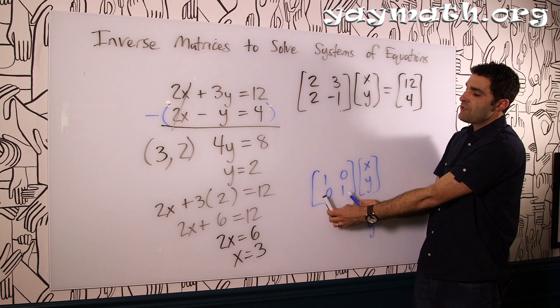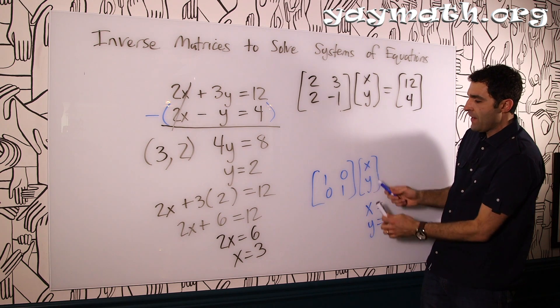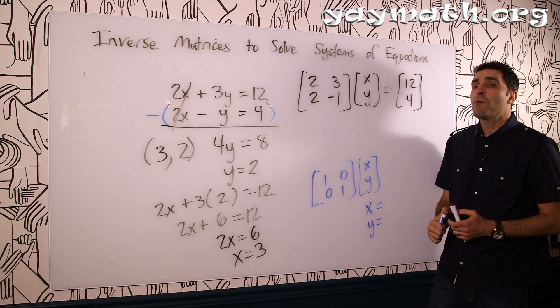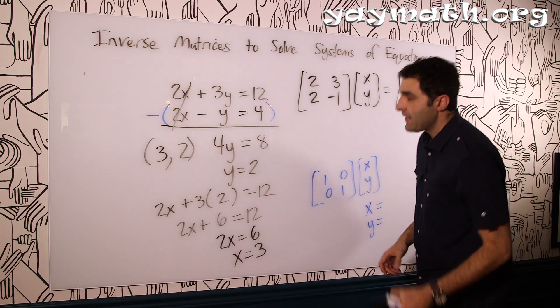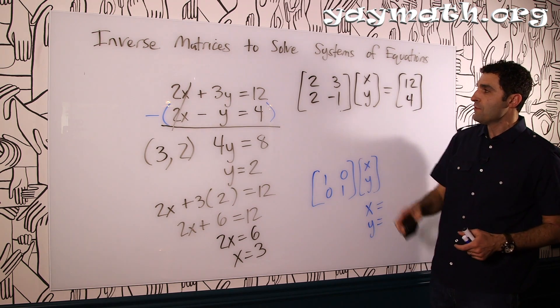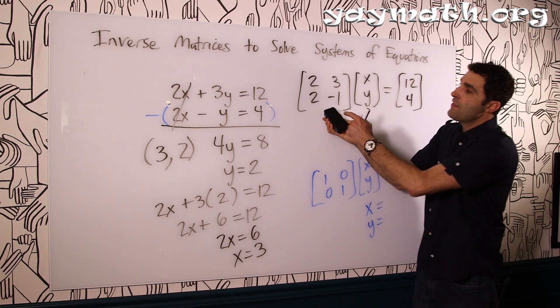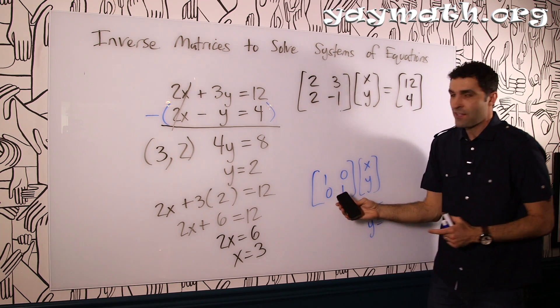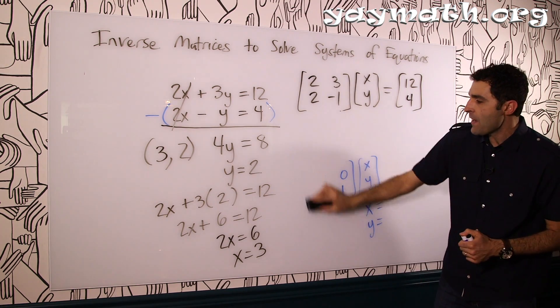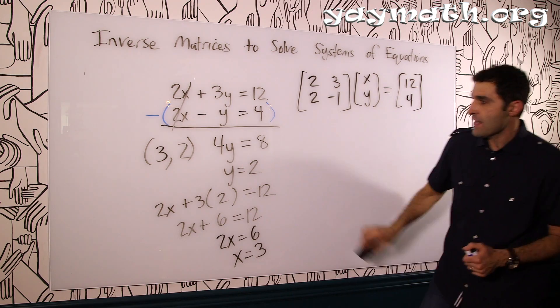That's the way I remember teaching it. So what can we multiply this to turn it into its identity, its core value of x and y? And the thing we multiply by is the inverse. So let's go ahead and get the inverse of this 2 by 2, and when we multiply this by its inverse, it'll turn into the identity.